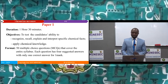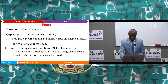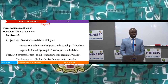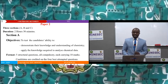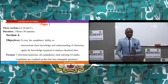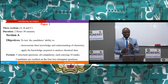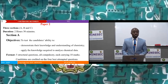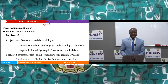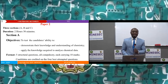Each question has four suggested answers with only one correct answer, for one mark. Paper two has three sections: Section A, B and C, and the duration for Paper two is two hours 30 minutes. Section A has as objectives to test the candidate's ability to demonstrate knowledge and understanding of chemistry and apply knowledge required to analyze chemical data. This section has five structural questions, each carrying 10 marks.